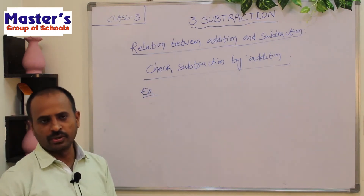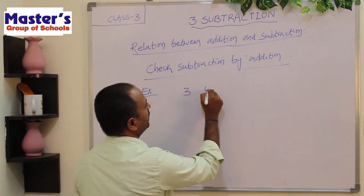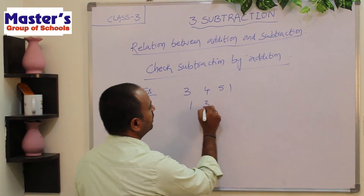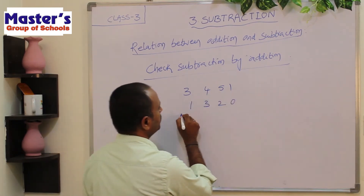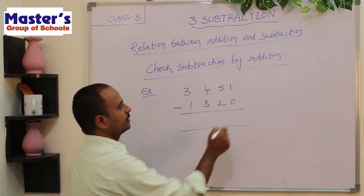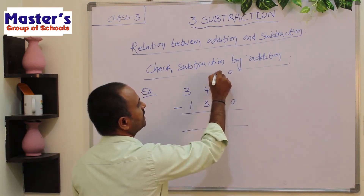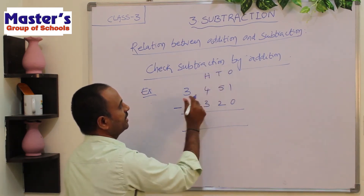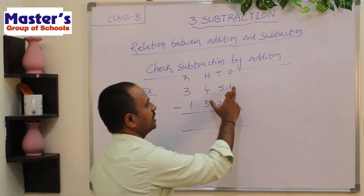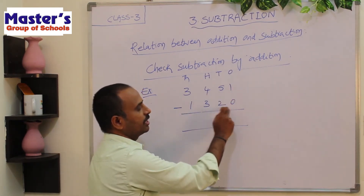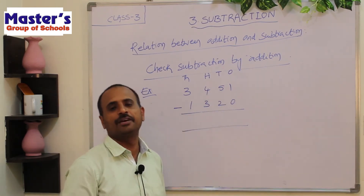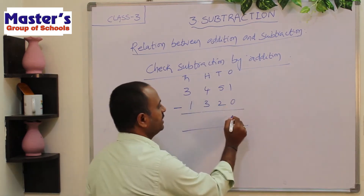Let us see an example. Take two numbers: 3451 and 1320. Now I will subtract these two numbers. In ones place, 1 and 0 are present. Subtract 0 from 1 — if we subtract 0 from any number we get the same number, so the answer is 1.